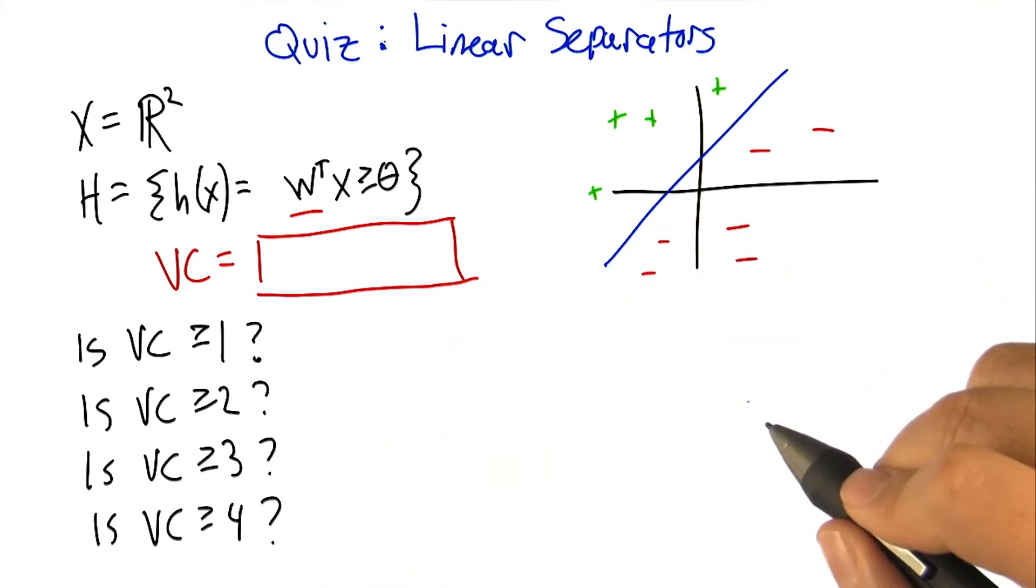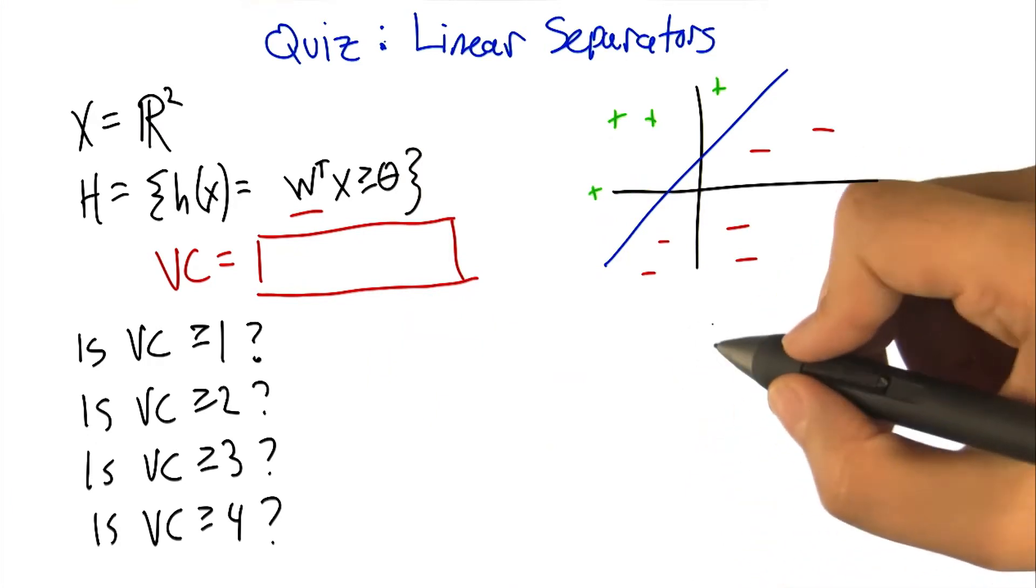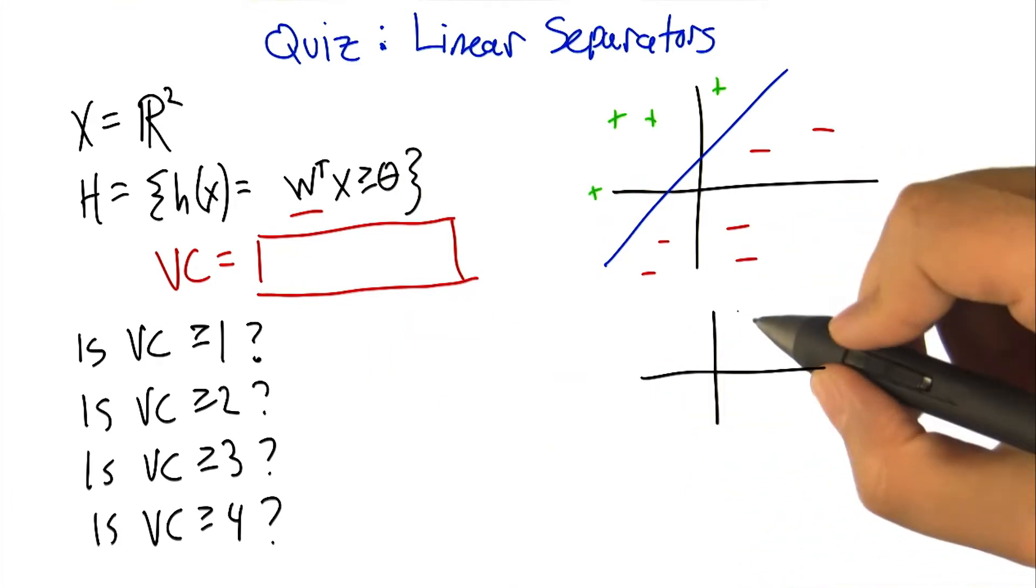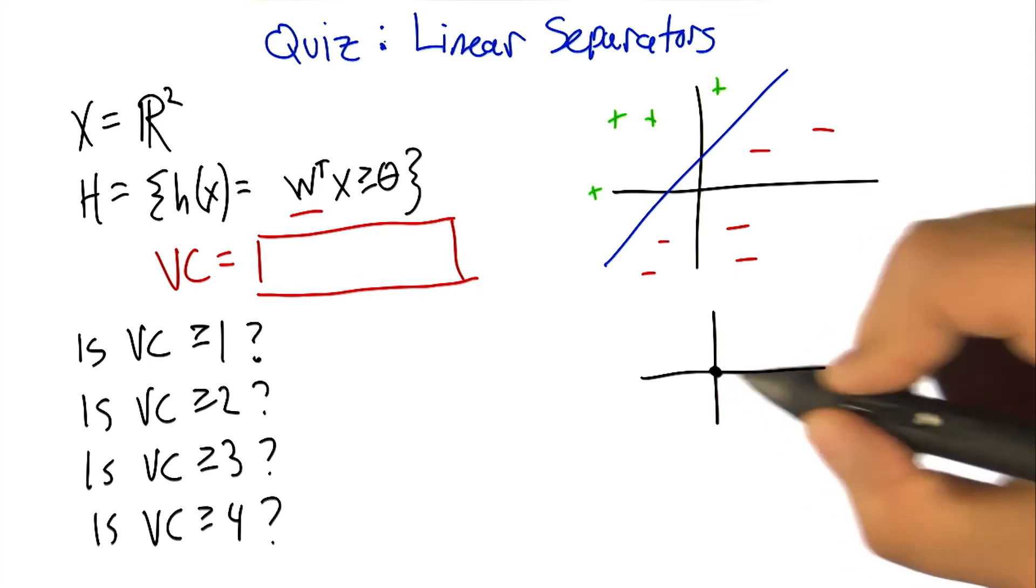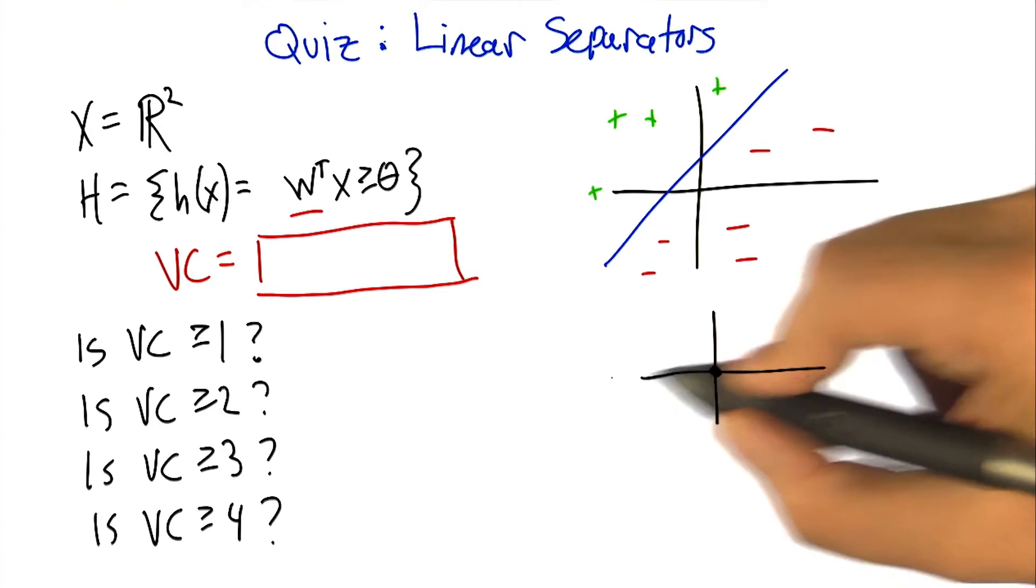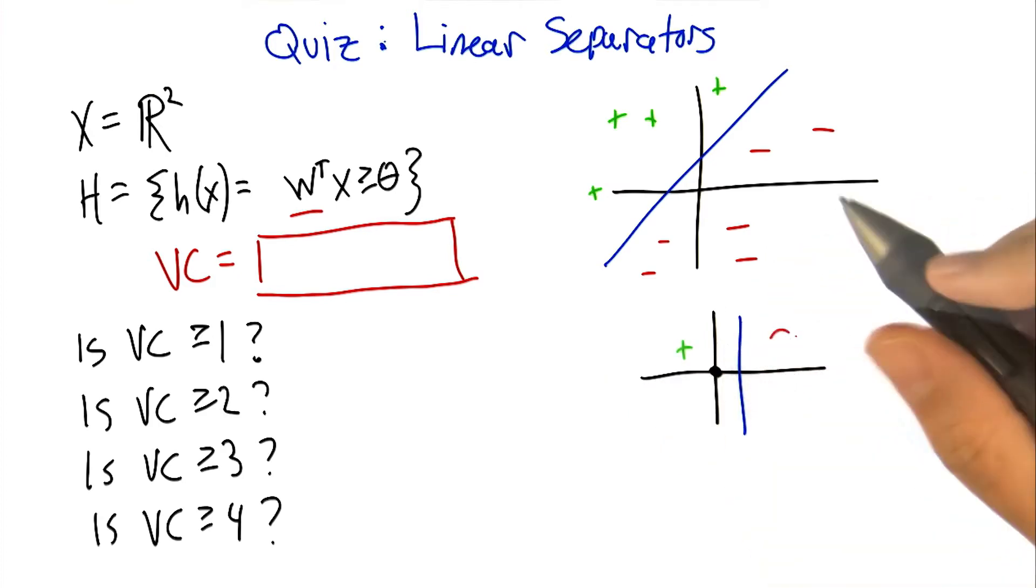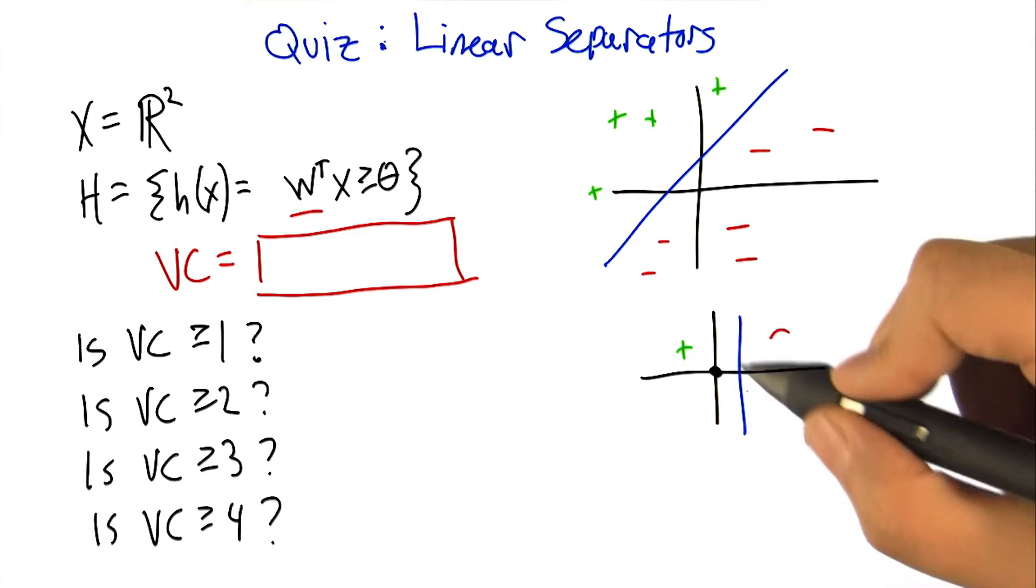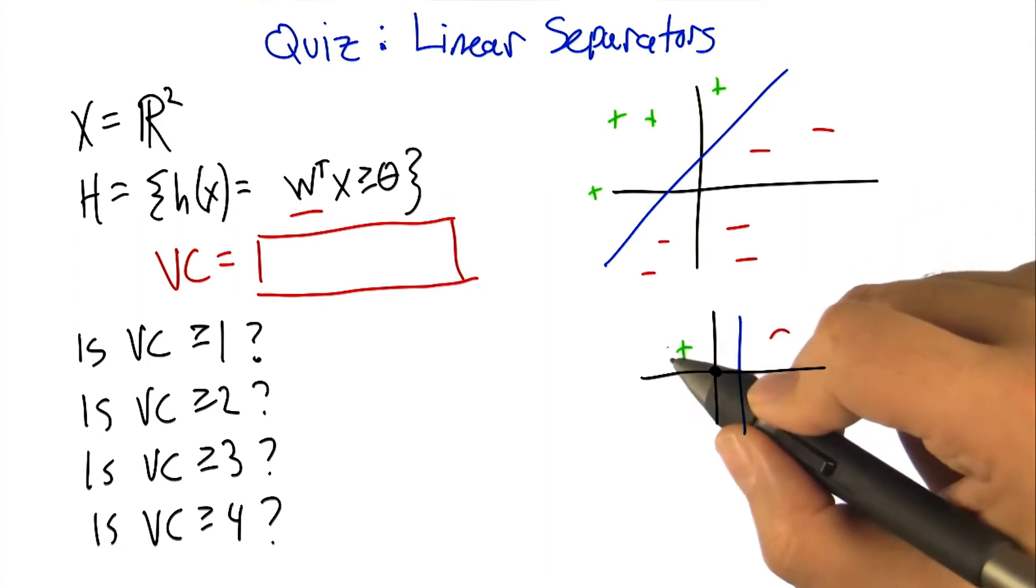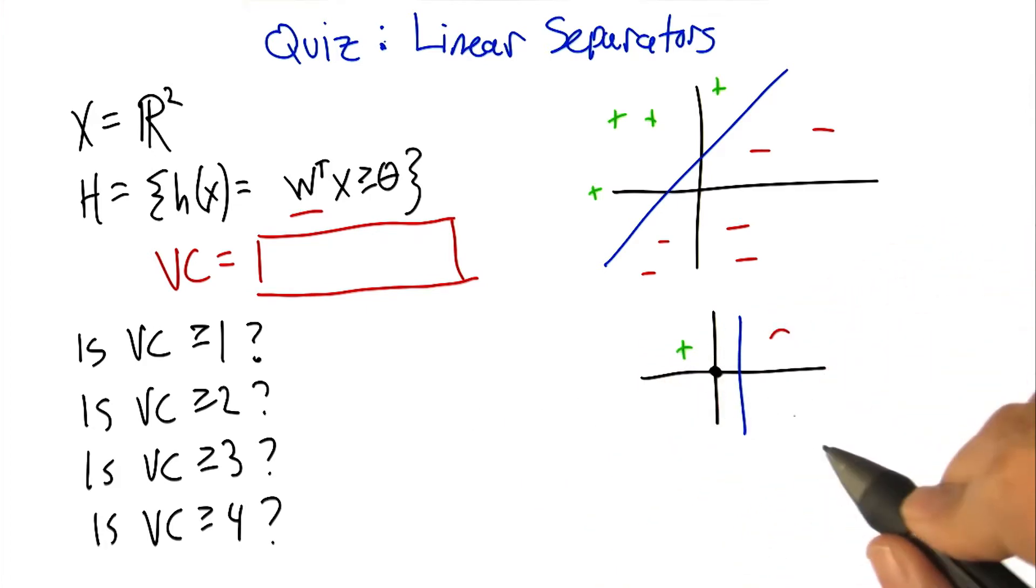So, is the VC greater than or equal to 1? Yes. So what would that mean? All we need to do is provide a point, call it the origin. And basically, we get to just pretend that it's like a single point on a line with a VC dimension of 1, and the same argument we had before applies.